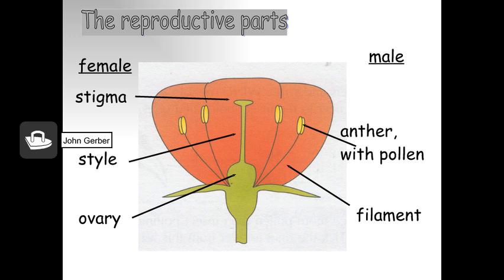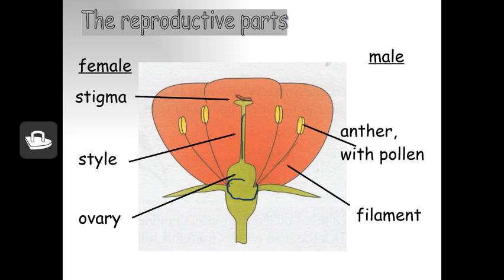Here's a complete flower with both male and female components. The anther is on top of the filament — the filament is the thread — and the anther contains pollen. The female component consists of a stigma, where the pollen will land and germinate; a style, which the pollen grows down through; and the ovary, where fertilization occurs.